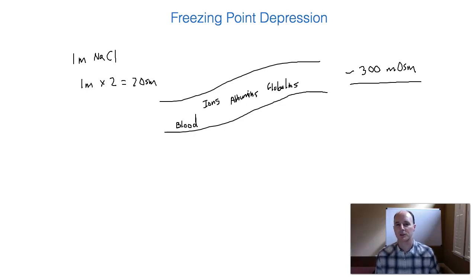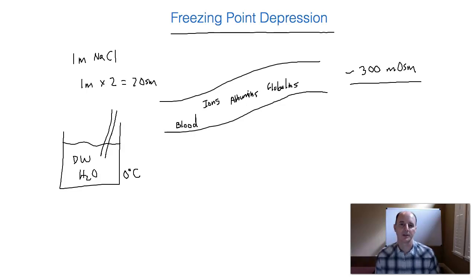So with complex solutions, what we use is a concept called the freezing point depression. So let's take a look at freezing point depression and what that actually means. If you had a container of pure water, what we oftentimes call distilled water (DW), if we took the temperature at which this pure water freezes at, we would get zero degrees Celsius. We know that pure water freezes at zero degrees Celsius.